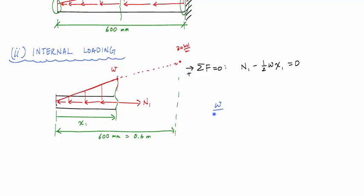By similar triangles, I could say that w over x1 is equal to 30 kilonewtons per meter over 0.6 meters. That tells me that w, or the distributed load intensity at some point x1, is equal to 50 kilonewtons per meter squared times x1.